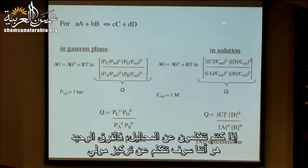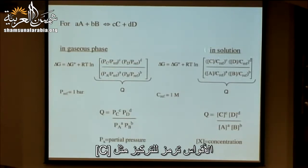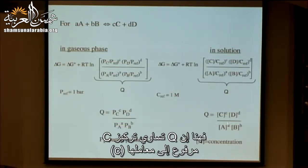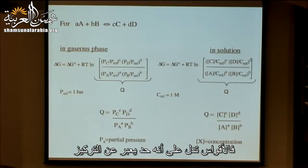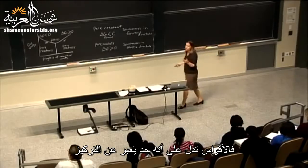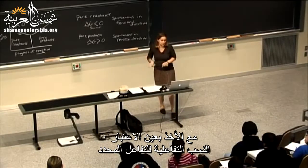For solutions, the reference is one molar, so that term also cancels out. When you see something in brackets — like [C] — that's a concentration term. So Q equals [C]^c × [D]^d divided by [A]^a × [B]^b. Q is just products over reactants, considering the stoichiometry of the particular reaction.